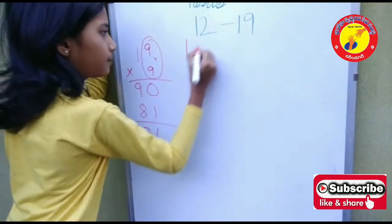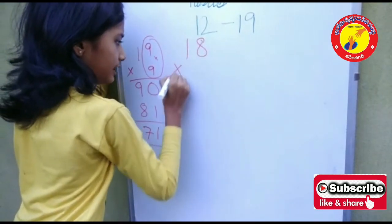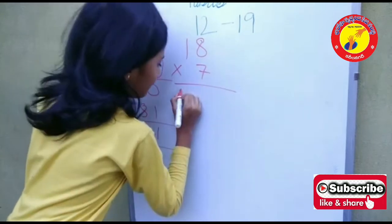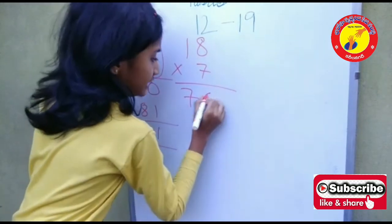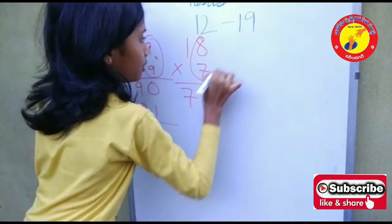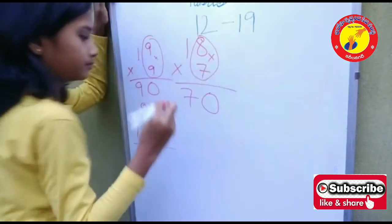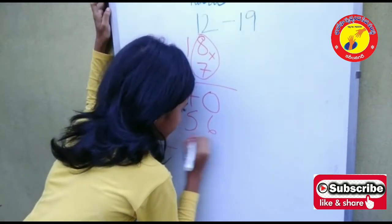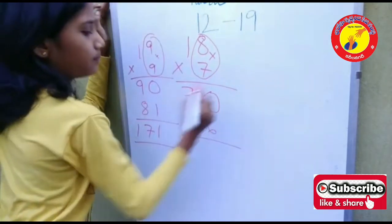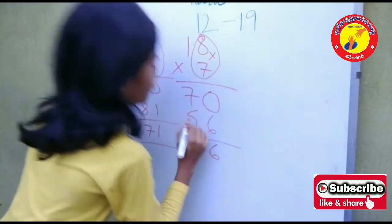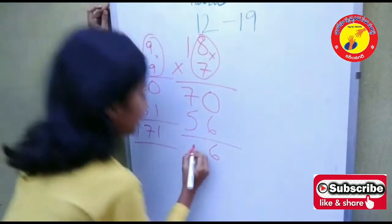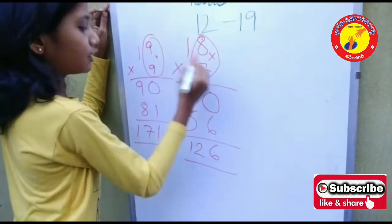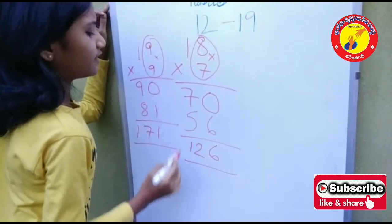Now, let's take 18 into 7. I am taking 7 as it is and 0 in the 1's place. Now, 8 into 7 is equal to 56. Now, 6 plus 0 how much? 6. Now, 5 plus 7 how much? 12. So, 18 into 7 is equal to 126.